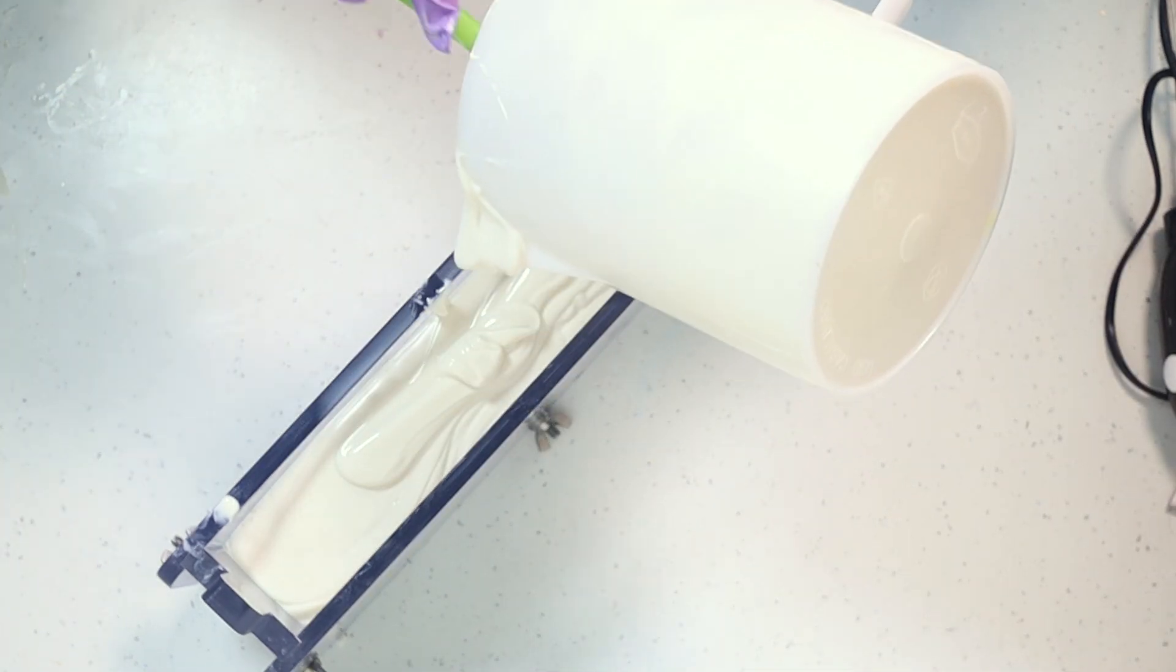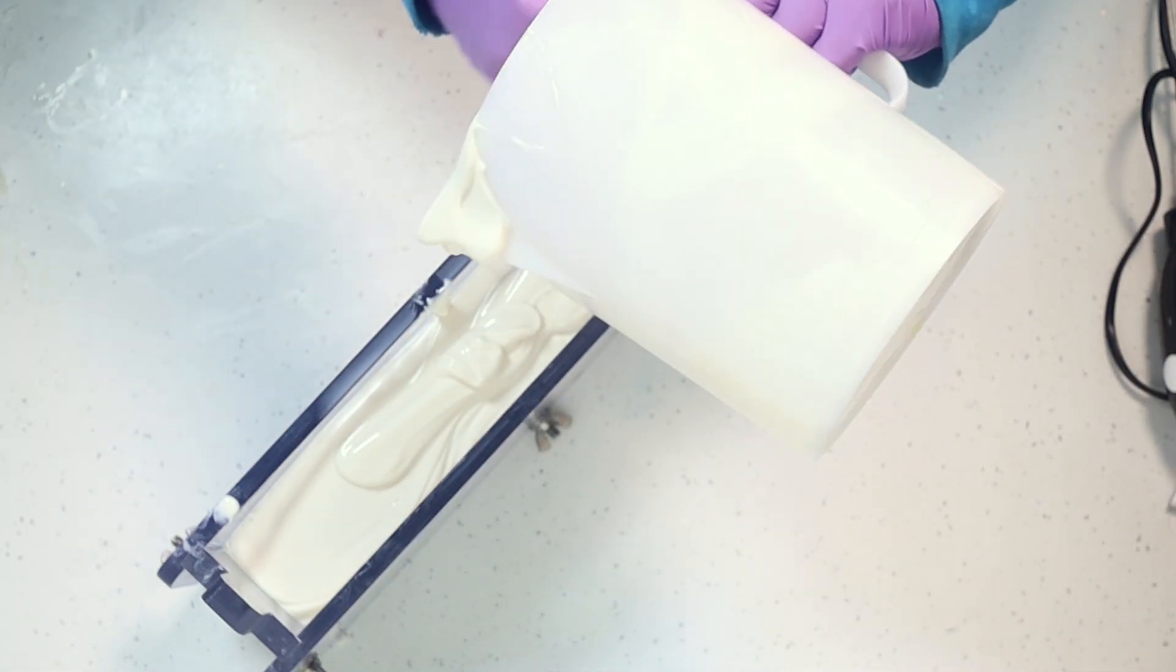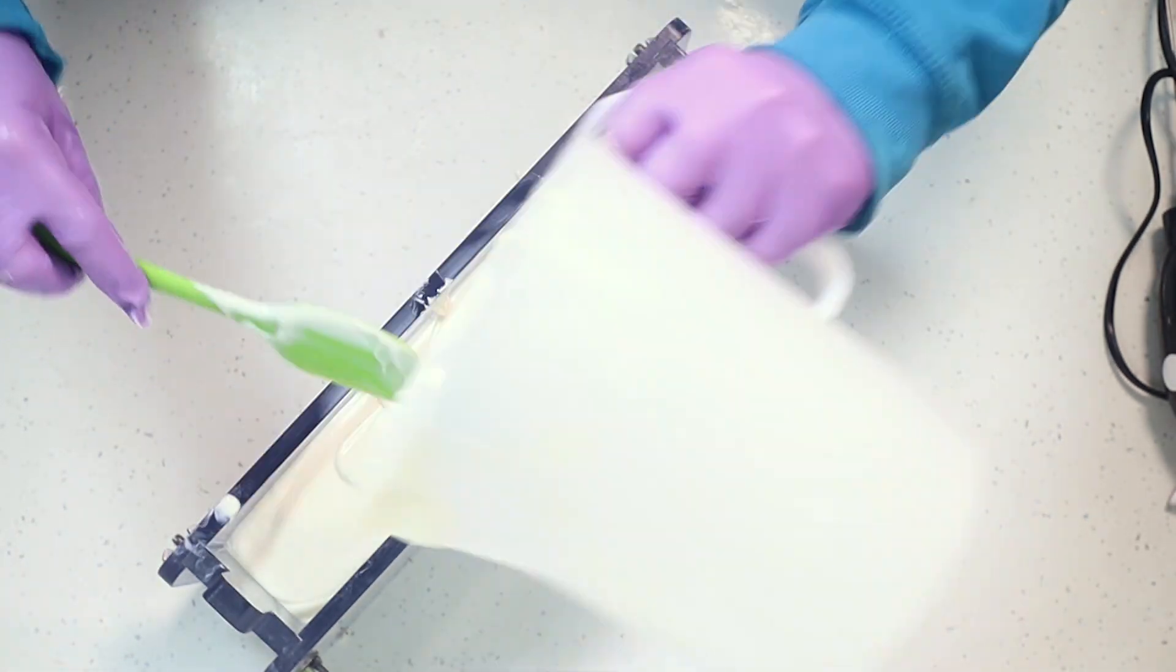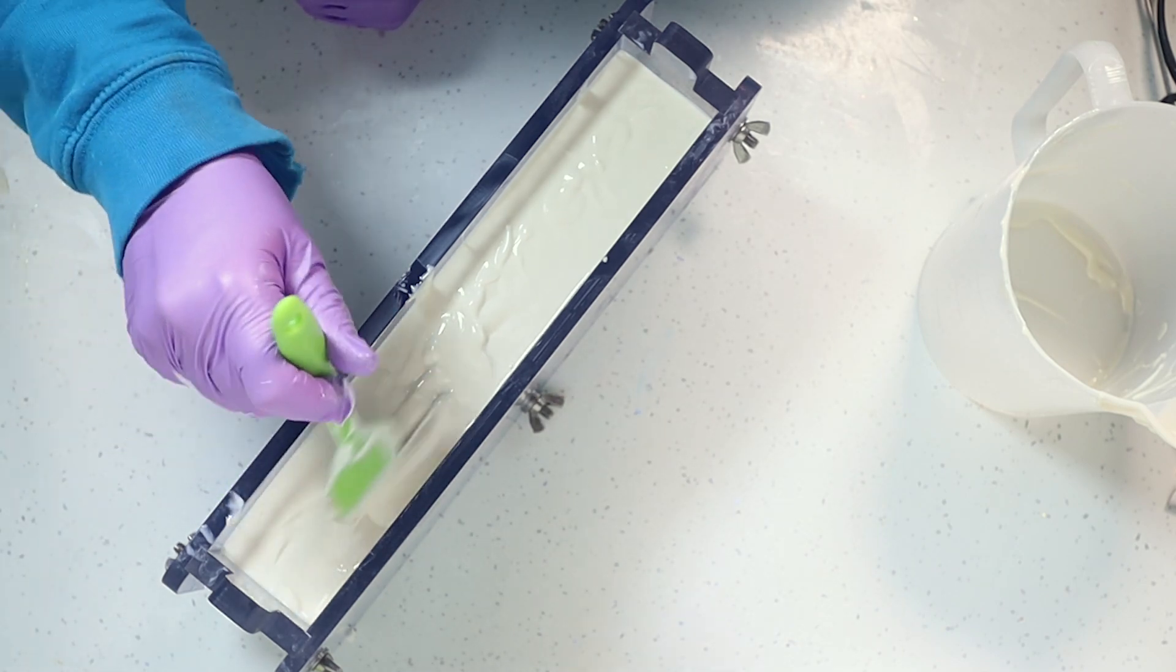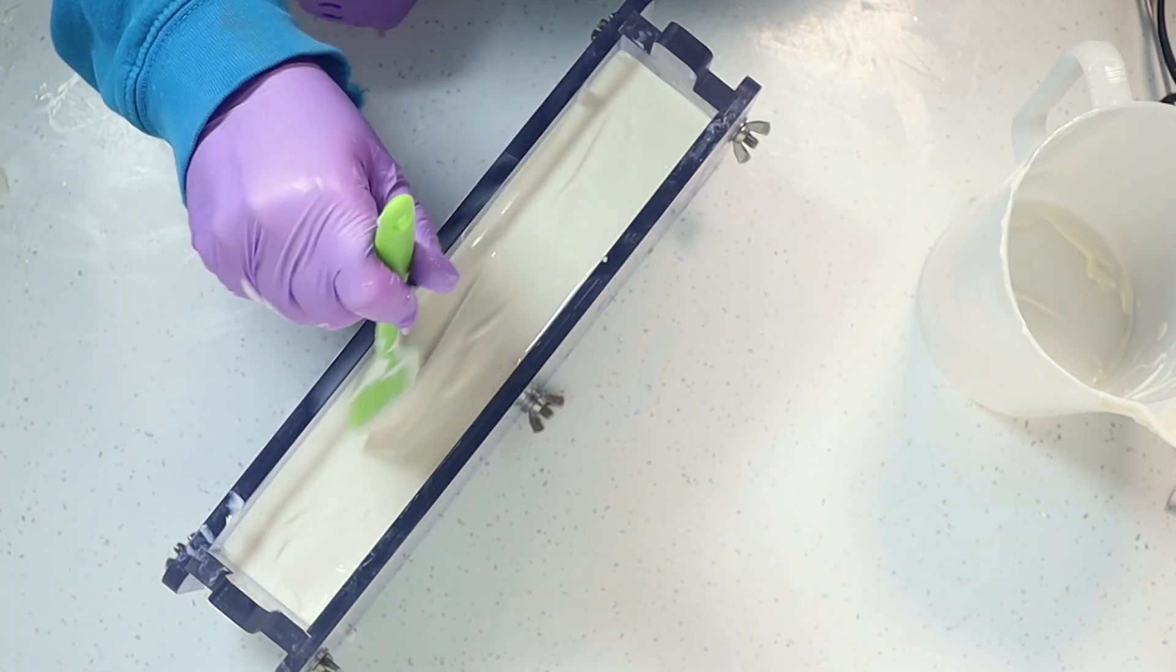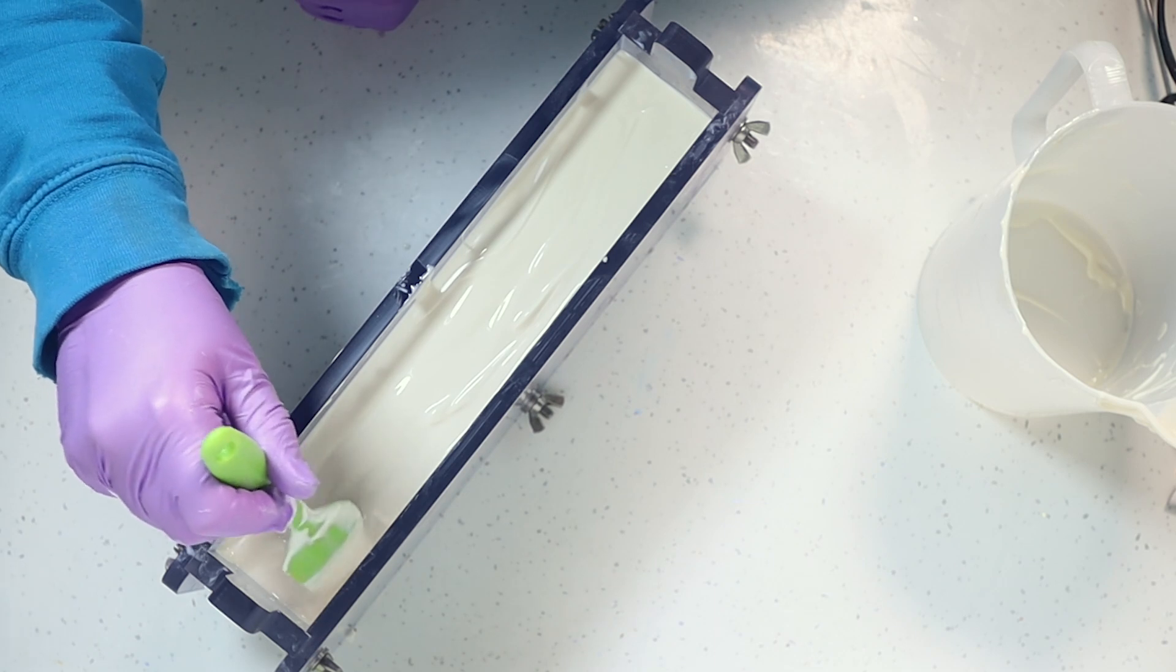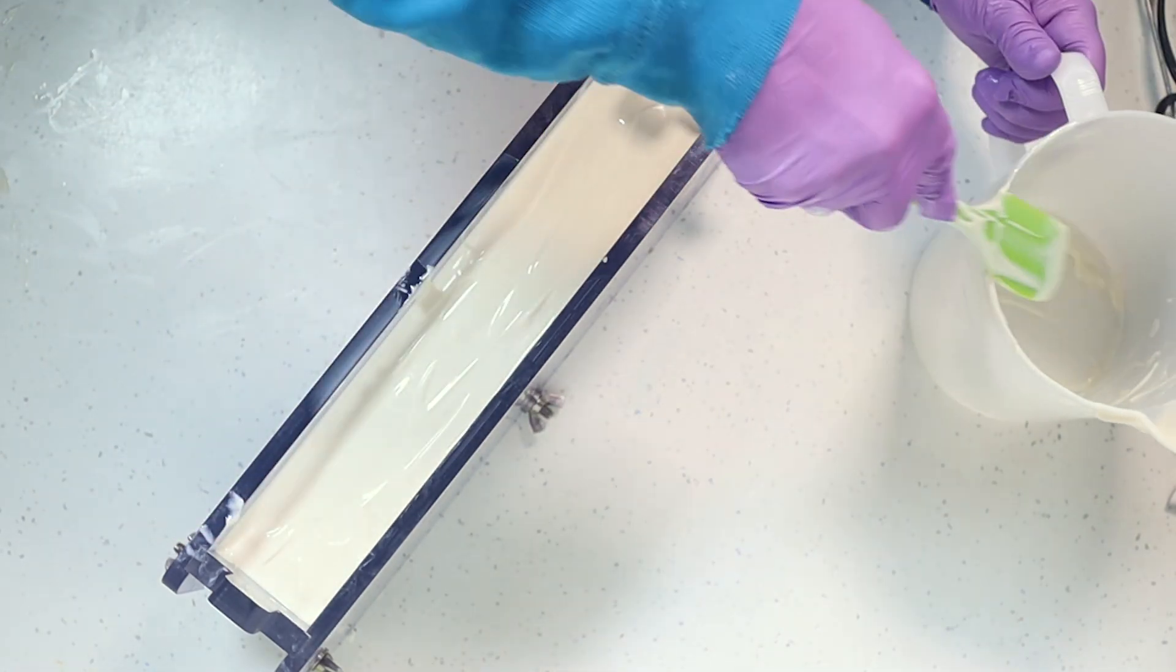Once that's all done I'm going to cover my soap and then CPOP it as normal, so into an oven that's been preheated to 70 degrees C, that's about 160 degrees F. Turn the oven off as soon as the soap goes in and I'll leave it in there overnight.